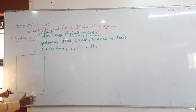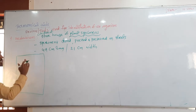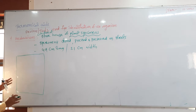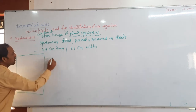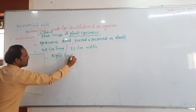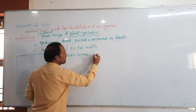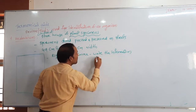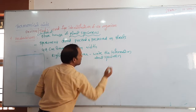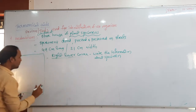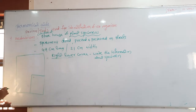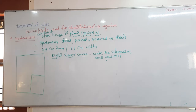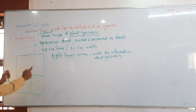On the herbarium sheet, we have to write the information in the right lower corner. This is very important - questions can directly ask: which one is not mentioned in the herbarium sheet?